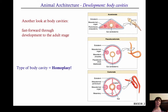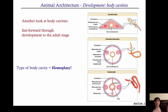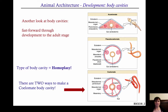Whether you're acoelomate, pseudocoelomate, or coelomate is a characteristic that has evolved multiply over evolutionary time. So it's not synapomorphic for large groups of organisms — you don't find monophyletic groups of coelomate organisms. There are two different ways that you can make a coelomic cavity, and I'll show you that on the next slide.